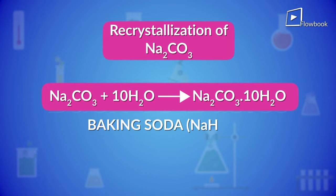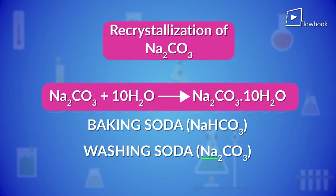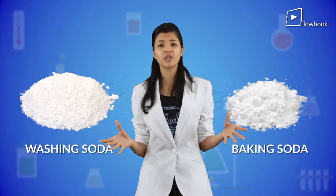If you notice, baking soda NaHCO3 has 1 Na, 1 H, 1 C and 3 O molecules, whereas washing soda has 2 Na, 1 C and 3 O molecules. Almost the same, but not. In fact, baking soda and washing soda have the difference of just carbon dioxide and water in them.